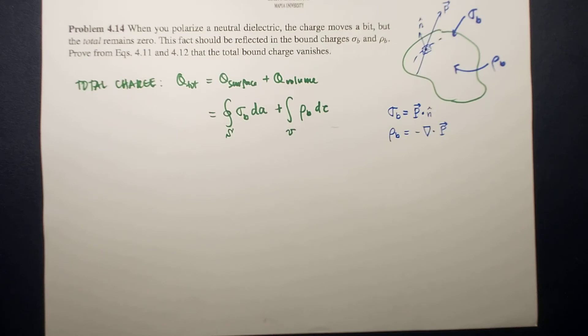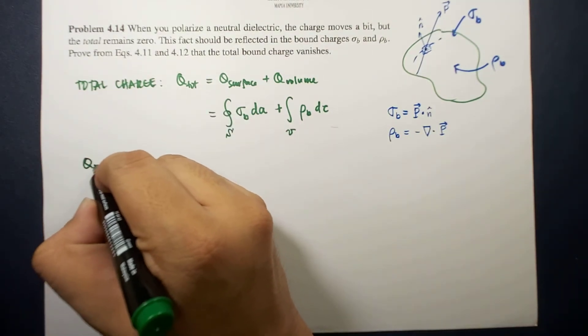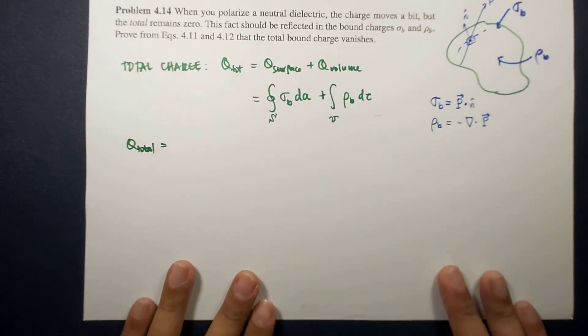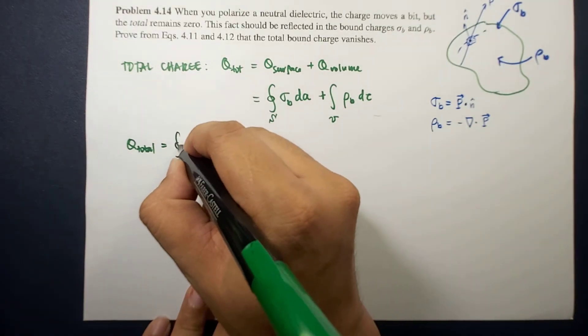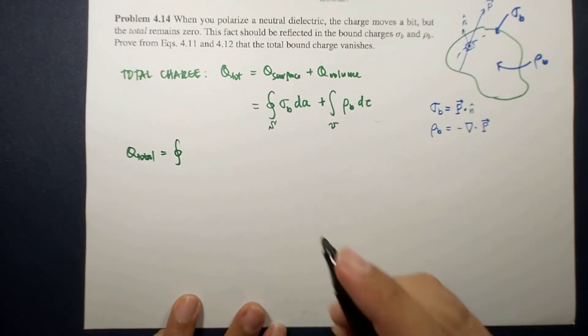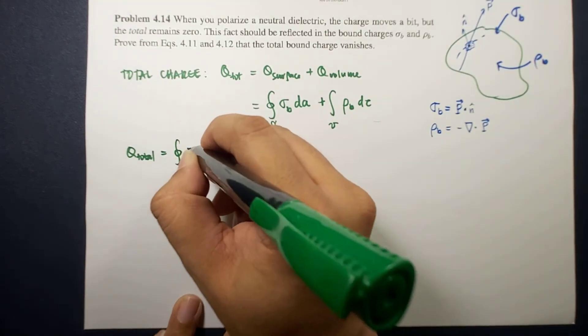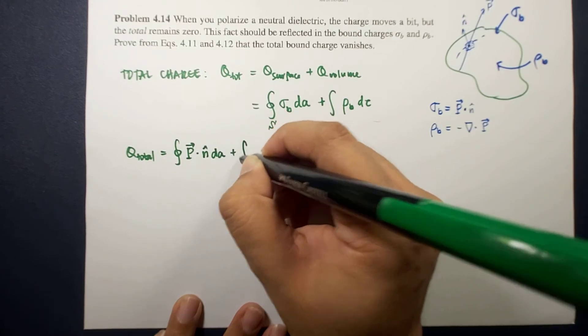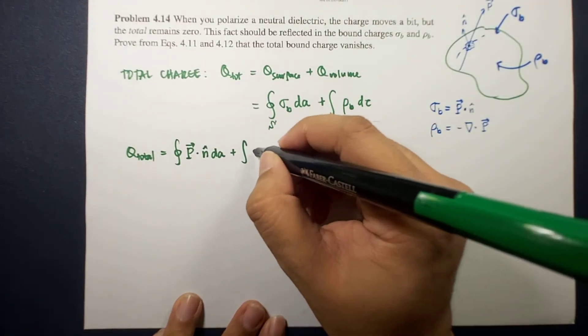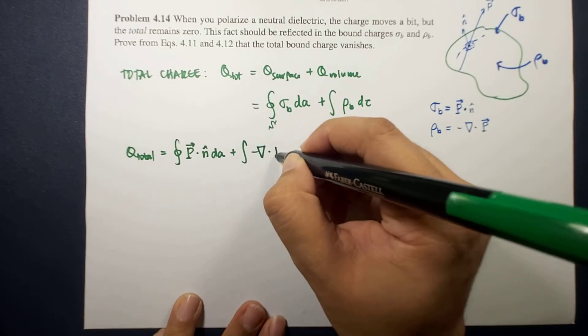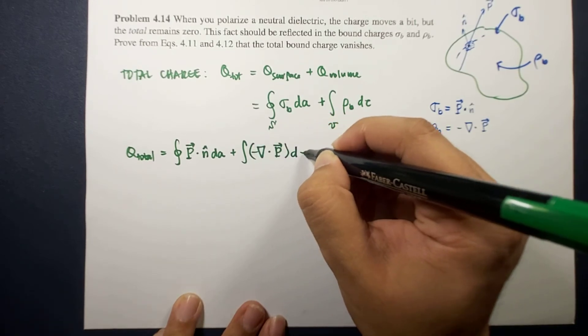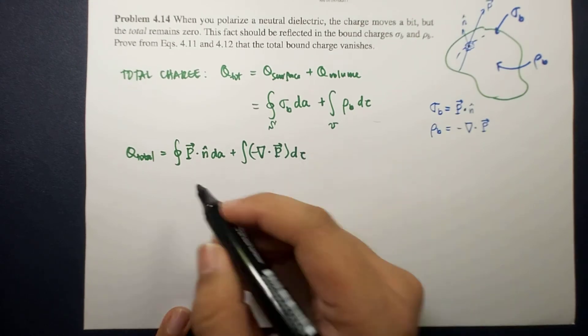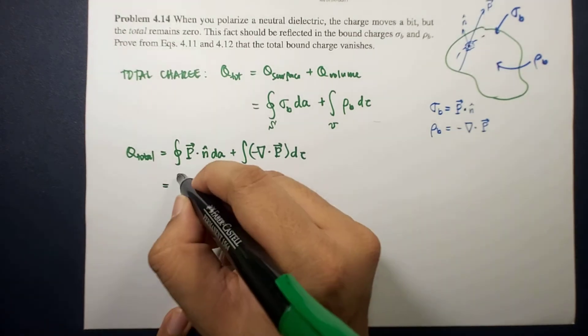Using this, we now have the following. The total charge will now be equal to the closed integral of P dot n-hat dA plus the integral of negative divergence of P dV. Using this, we simplify this.